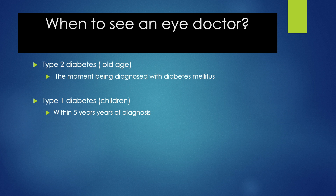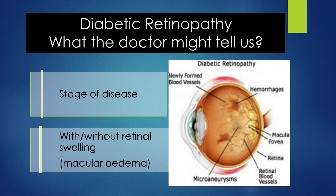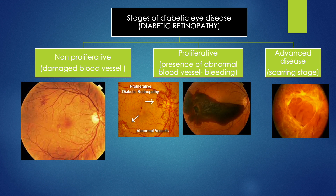What will the doctor tell the diabetic patient? Doctors will usually discuss the stage of the disease. They will also discuss the possibility of retinal swelling involving the macula. The macula is the center part of the retina which is used to see objects centrally. When it comes to stages of diabetic retinopathy, it can either be the non-proliferative stage or the proliferative stage.